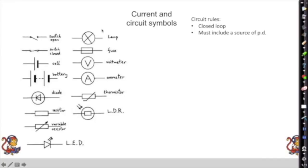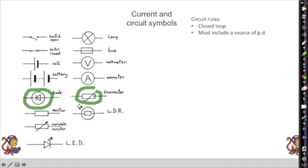Here are some common circuit symbols to know. A diode only lets electricity through in one direction — its symbol shows an arrow with a flat line. A thermistor is like a resistor but with a diagonal line. An LDR (light-dependent resistor) has a rectangular box with two arrows pointing inward representing light going in. A variable resistor has an arrow through it to show the resistance can be changed.